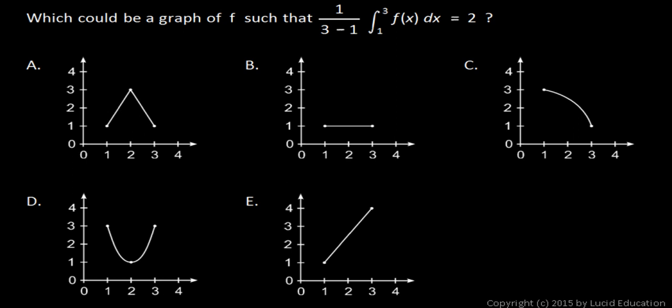Which of these graphs could be a graph of function f such that 1 over 3 minus 1 times the integral from 1 to 3 of f of x dx is equal to 2?